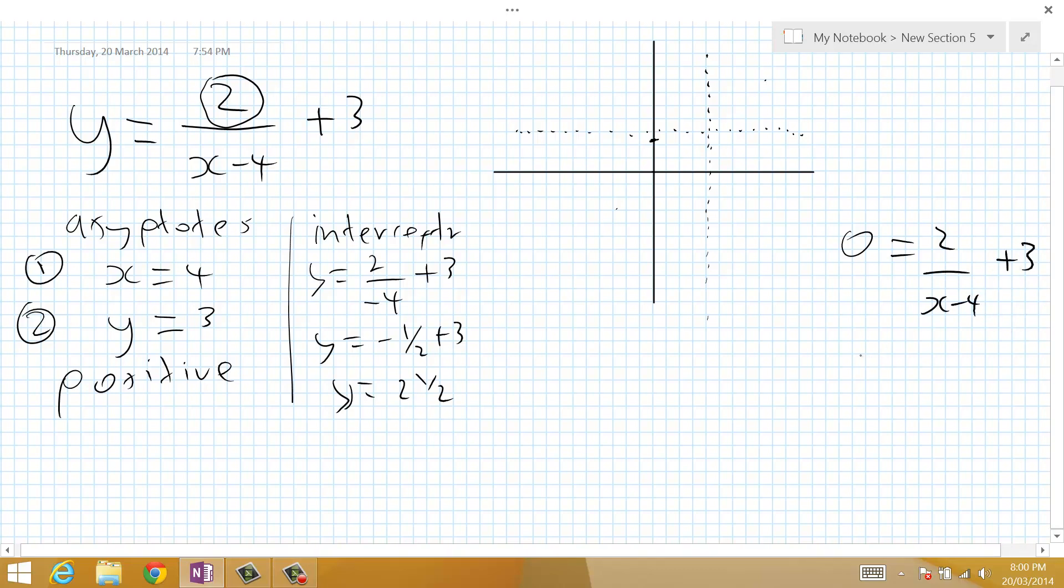The opposite of addition is subtraction. So we subtract 3 from both sides and end up with minus 3 equals 2 over x minus 4. That's dividing. We multiply. We end up with minus 3x plus 12 equals 2. Subtract 12 from both sides. Minus 3x equals negative 10.